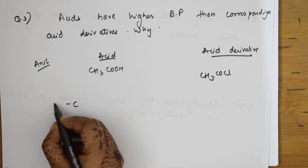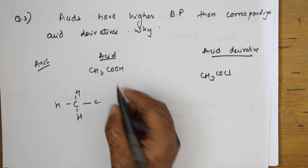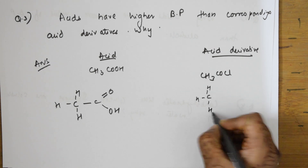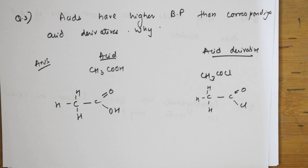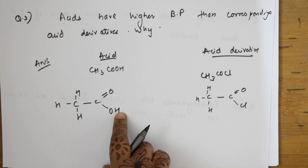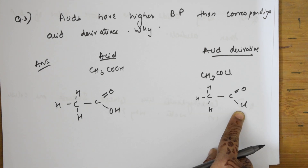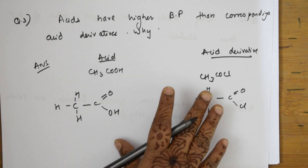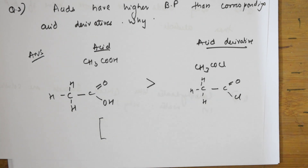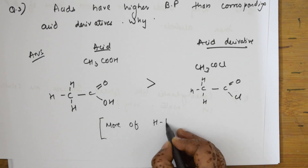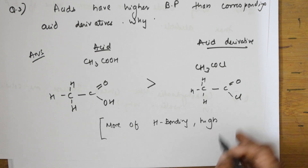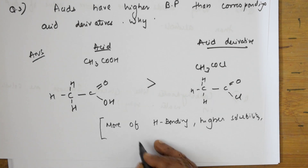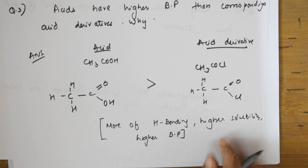Drawing the structure: acetic acid is CH3-C(=O)-OH, and the acid derivative is CH3-C(=O)-Cl. In acetic acid, you have two sides available for hydrogen bonding, whereas in acetyl chloride there is no O-H group and thus no hydrogen bonding. More hydrogen bonding means higher boiling point and higher solubility, which is why acetic acid has a higher boiling point.